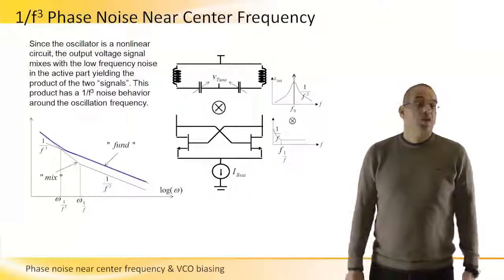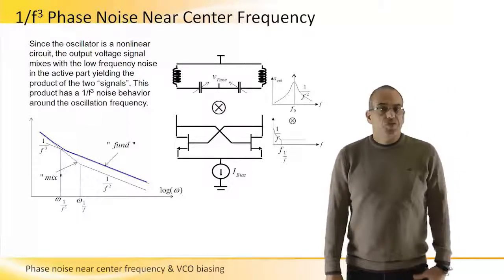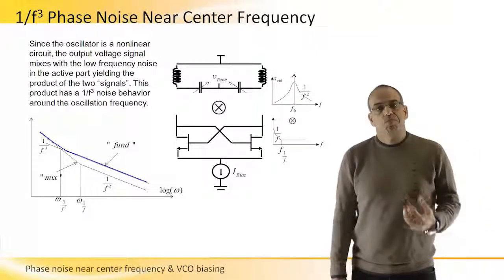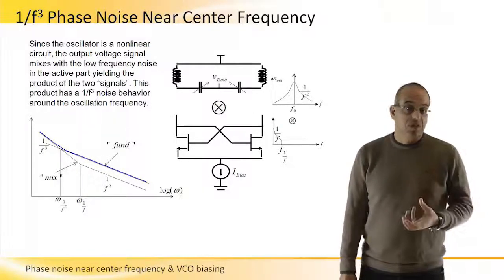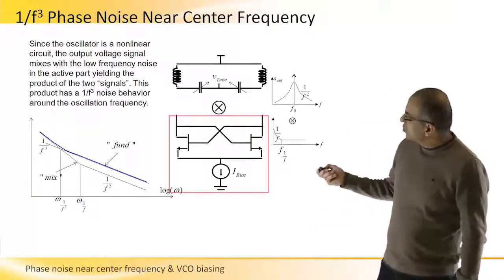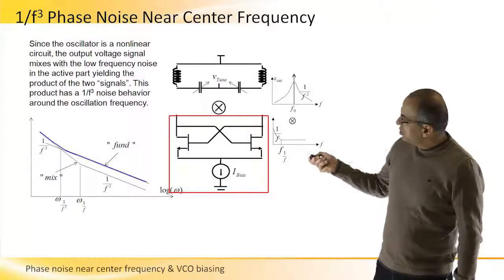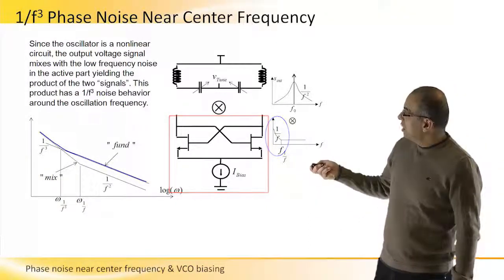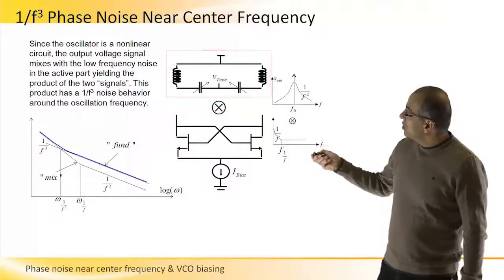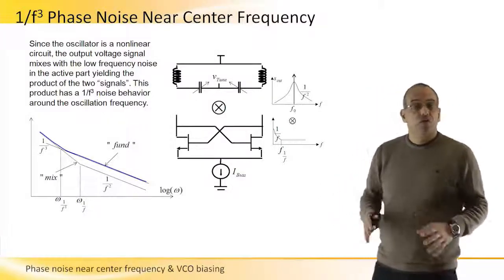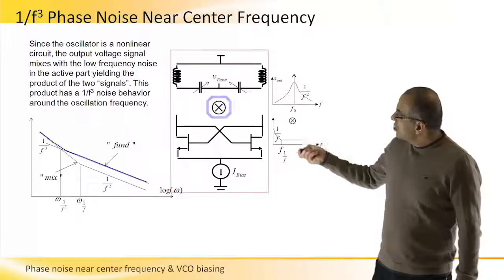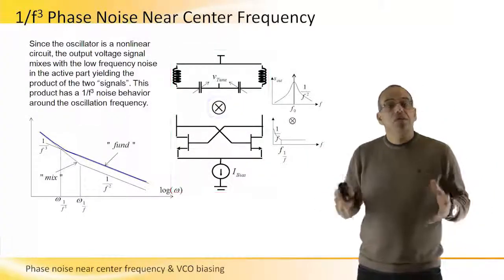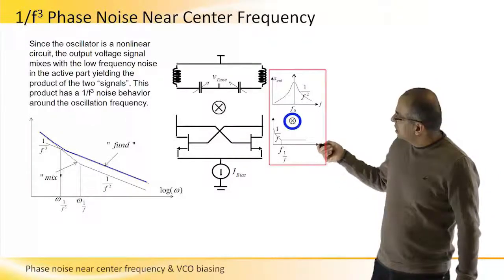Since the VCO is a very nonlinear large signal circuit, it is very difficult to analytically analyze the 1/f³ behavior quantitatively. But qualitatively, we can describe the two parts: the transistors contribute 1/f noise that depends on bias current, and the tank contributes thermal noise that produces 1/f² phase noise. These two halves interact in a nonlinear fashion, generating a product that is 1/f³.